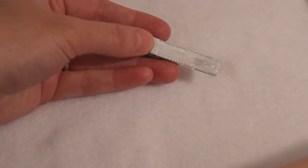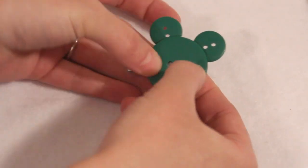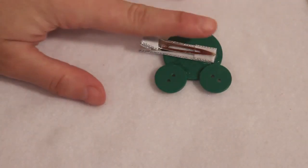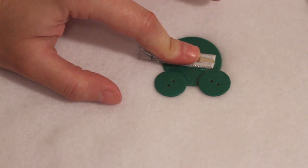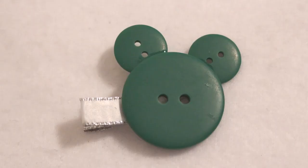Once everything is dried, decide how you want your Mickey to be placed on the clip, apply glue and press into place. Once the glue is dry, your Mickey hair clip is ready to wear.